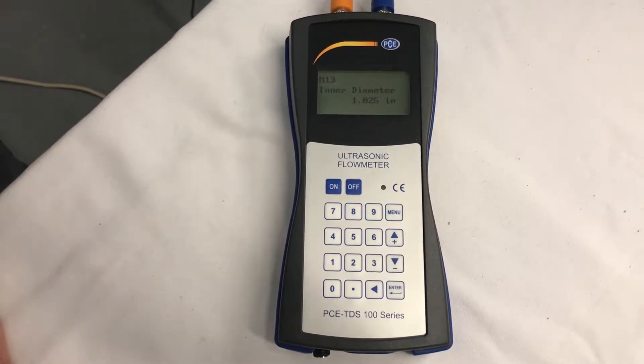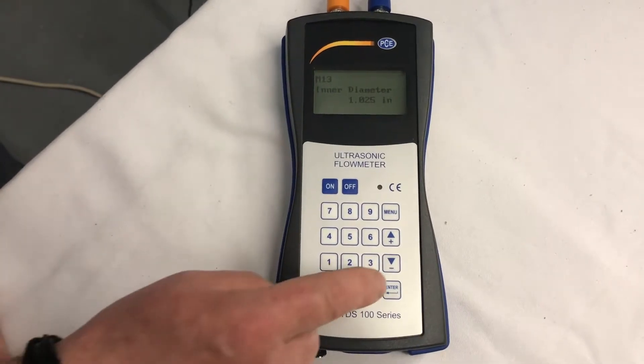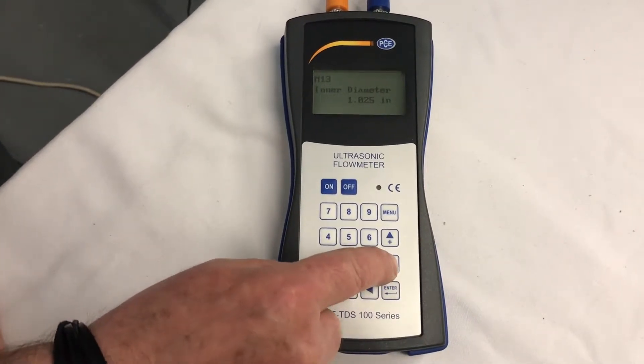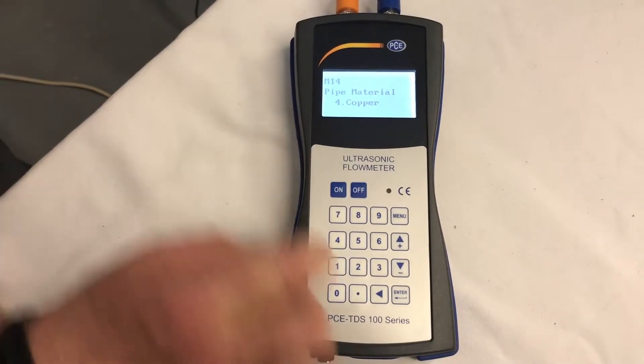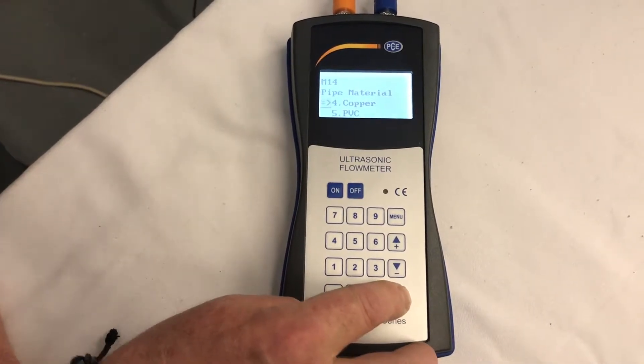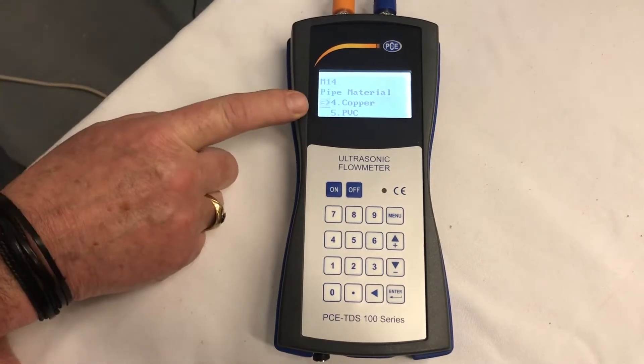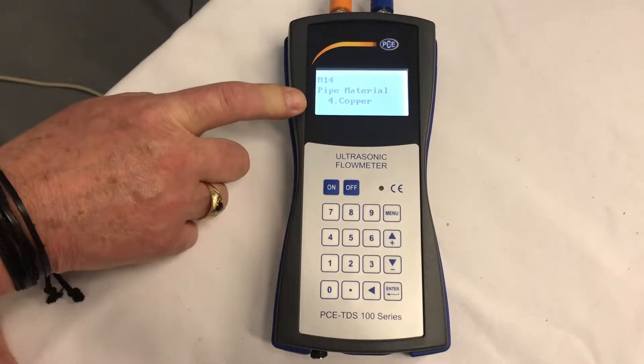So we have to go, according to our book, we have to go to M-14. We can use our down arrow to go M-14. We are using copper. So that's what we want, not PVC this time, it's copper. So enter copper, it's in.